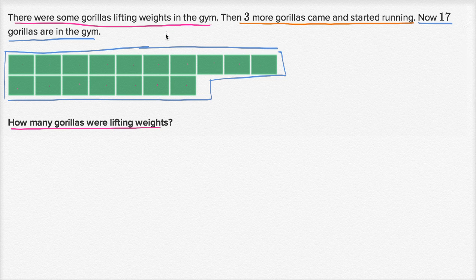Now there were some gorillas in the gym. Three more came and started running. So maybe these are the three that came in and started running: 1, 2, 3. So how many were there to begin with? How many were there lifting weights?